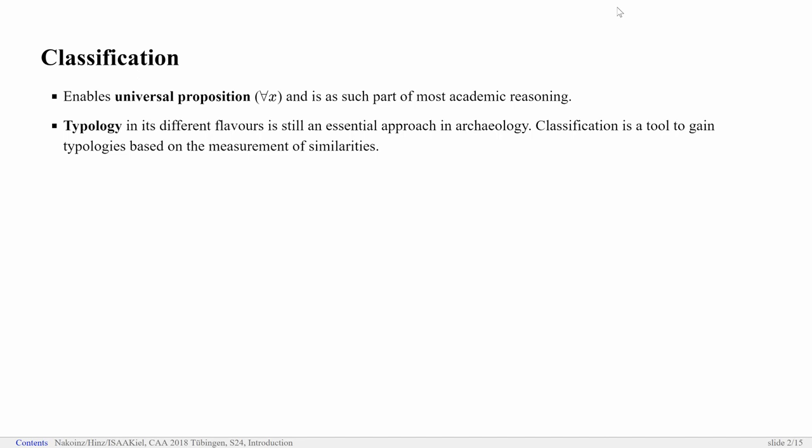And this is something which is essential for most parts of academic reasoning. If you want to make universal proposals, we need to define certain terms based on features of the elements which are grouped together in this term. And even if I say most methods of type A in phase 3, this requires a classification. It's a very fuzzy proposition, but it requires a classification. So classification is a very important thing.